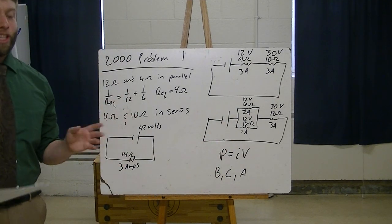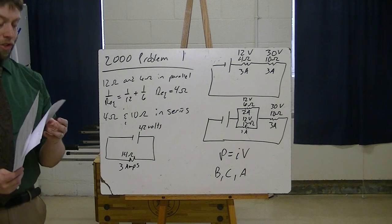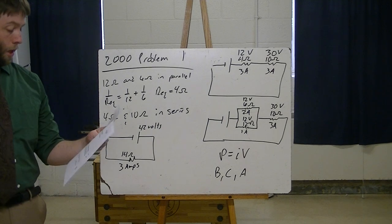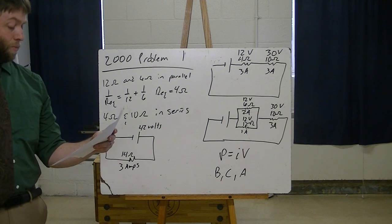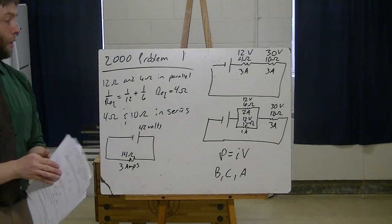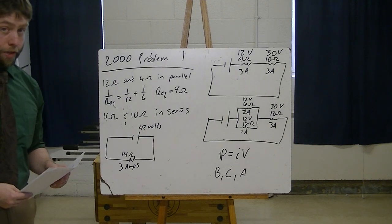So part A actually had a crap ton of work. Let's actually see how many points that was worth. It should be worth a fair number. Part A was worth 4 points. So almost a third of the entire problem. Dramatic pause. Move on to the next part.